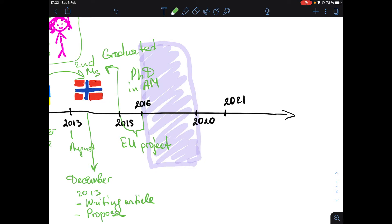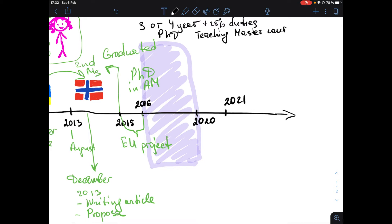In Norway you have a possibility of having three or four-year PhD. During a three-year PhD you only do your research. During a four-year PhD you have three years for research plus 25% on duties. In my case, duties were teaching, developing and teaching the master course, and helping with writing proposals. In addition to doing research, writing articles, and going to conferences.